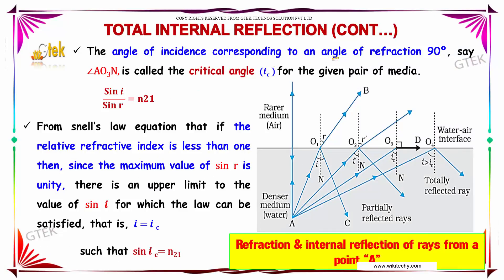The angle of incidence corresponding to an angle of refraction of 90 degrees — shown as ray A-O3-N — is called the critical angle for the given pair of media. As per Snell's law, sin I / sin R = N21. If the relative refractive index N21 is less than 1, there is an upper limit to the value of sin I for which the law can be satisfied. That angle is I = Ic, such that sin Ic = N21. This angle is called the critical angle.